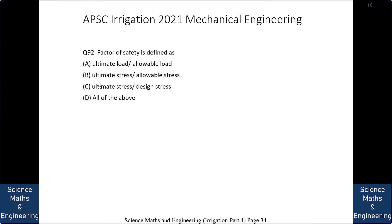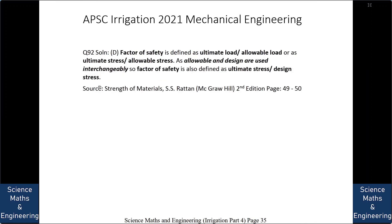Factor of safety is defined as: A. ultimate load / allowable load, B. ultimate stress / allowable stress, C. ultimate stress / design stress, or D. all of the above. The answer is D: all of the above, as factor of safety can be defined as ultimate load by allowable load, or ultimate stress by allowable stress, or ultimate stress by design stress.